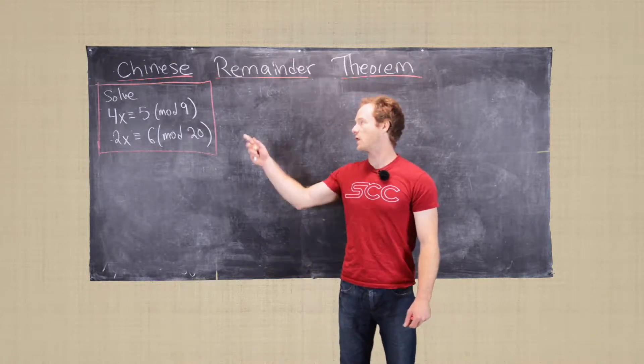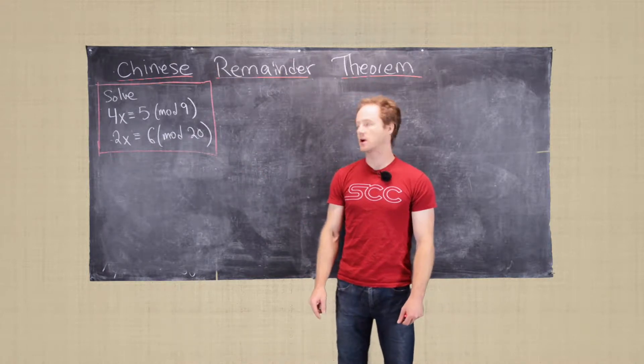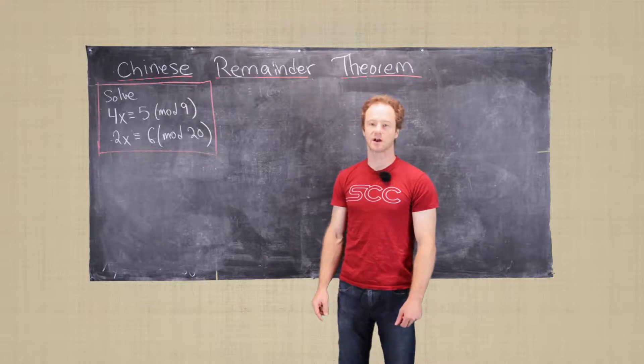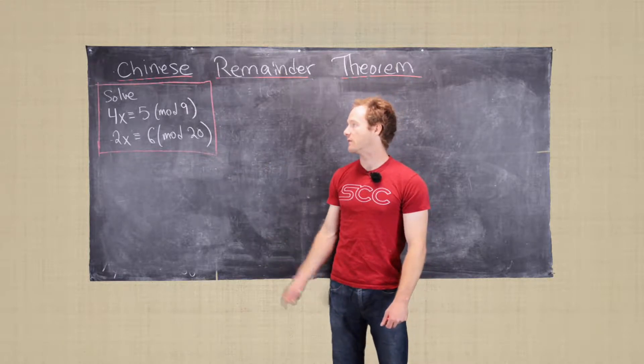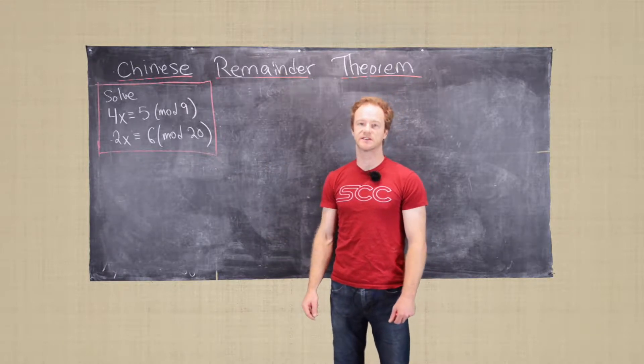Okay, in this video we're going to solve the following system of linear congruences. So we have 4x is congruent to 5 mod 9, and we have 2x is congruent to 6 mod 20.